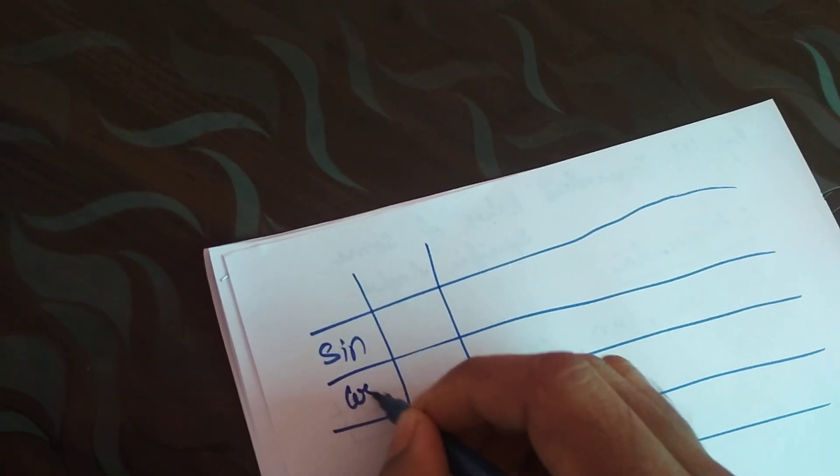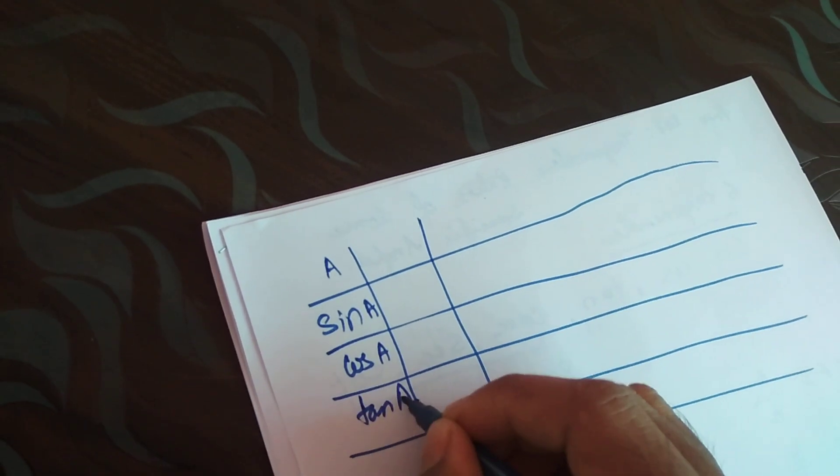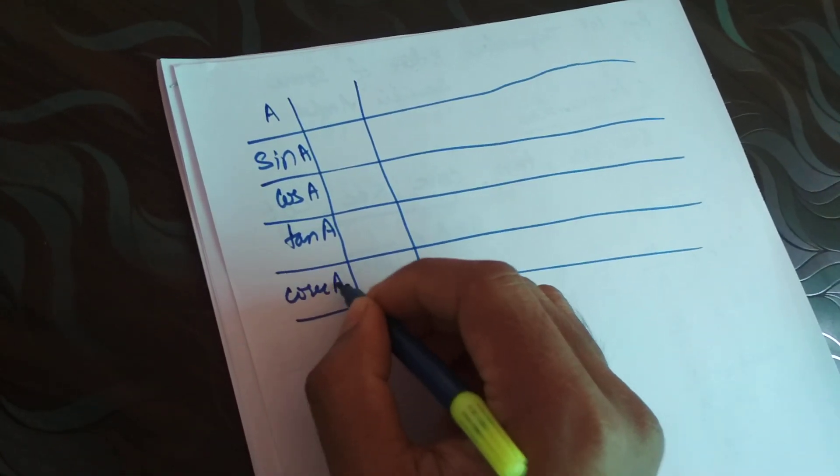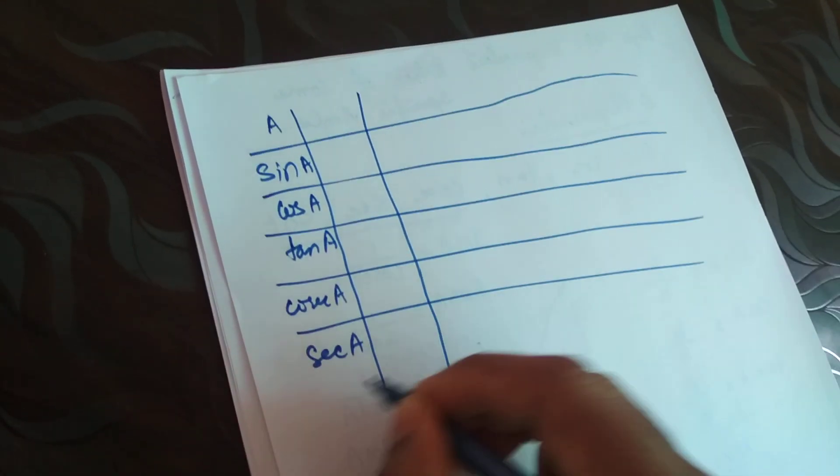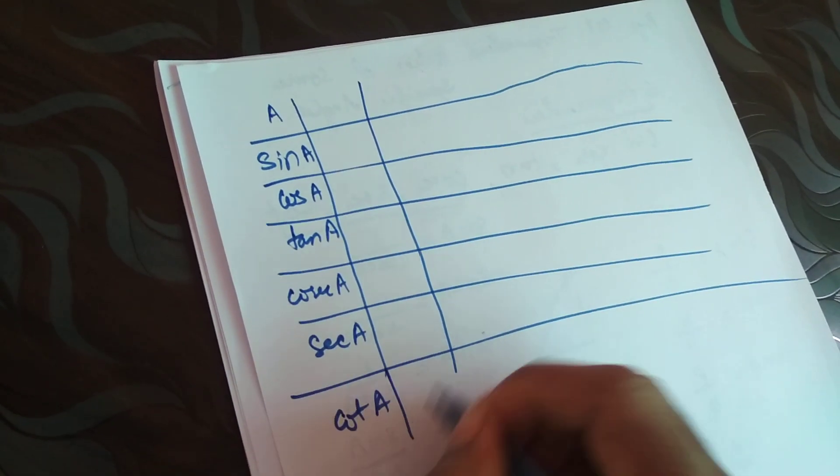I'm putting angle A, sine A, cos A, tan A, cosec A, sec A, and cot of A. So these are the terms.